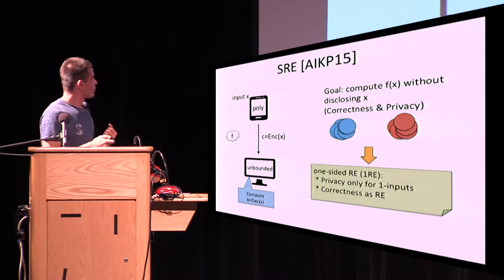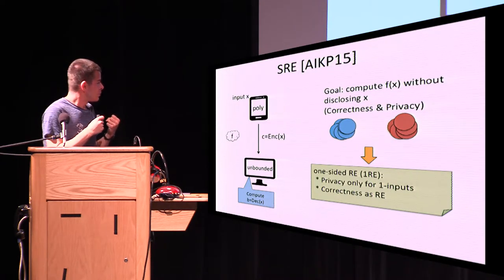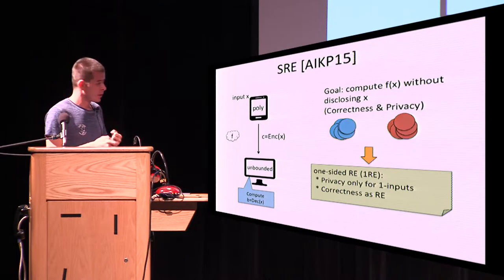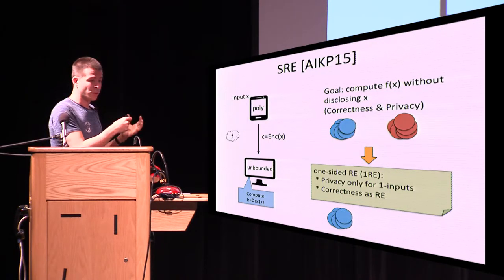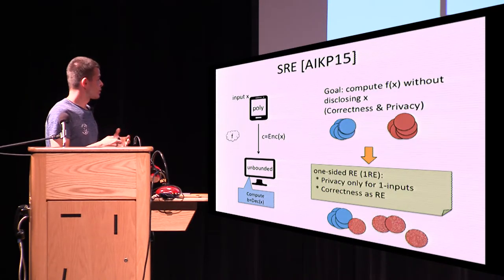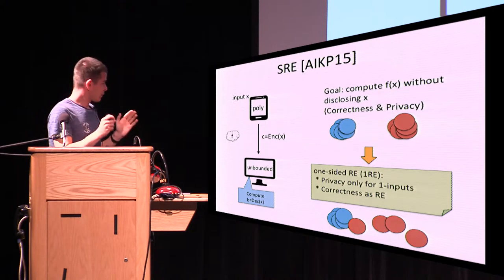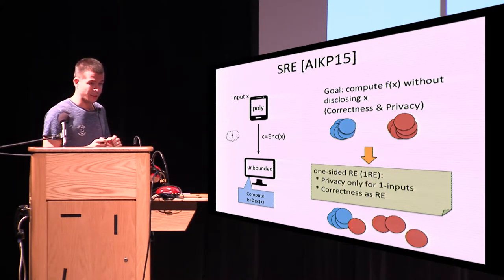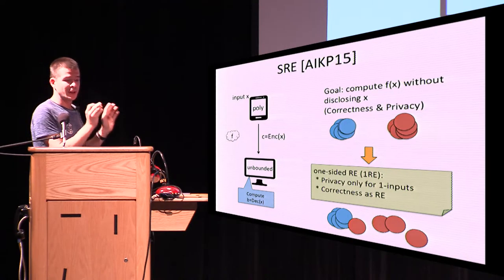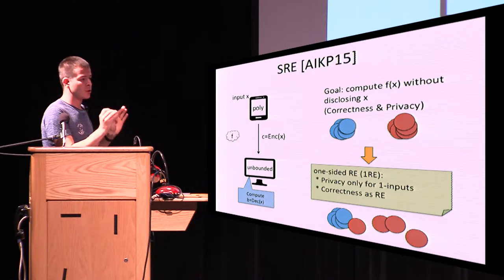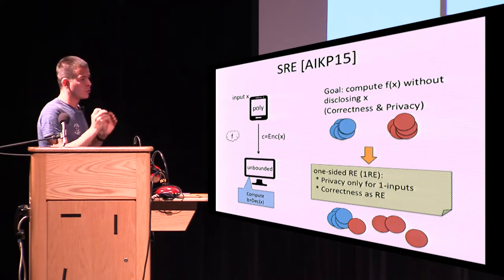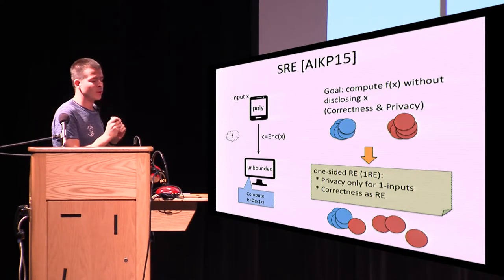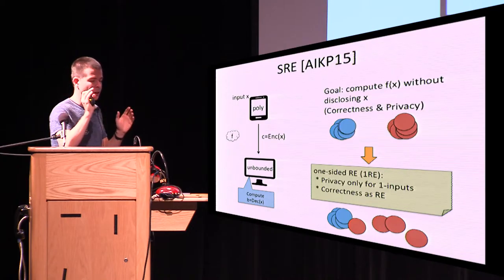In the one-sided version, you require privacy only for one input class, with correctness as before. The blue bubbles are still close to each other, but the red bubbles are now distributed however we want, except that they should be far from the blue bubbles. This is the conceptual understanding of 1RE: it gives you a way to map inputs to two distributions where one-sided privacy means you can map only one class to a distribution and the second is far apart.